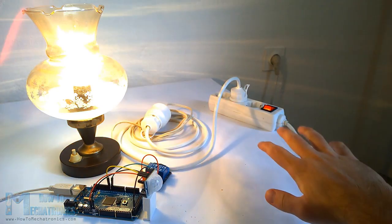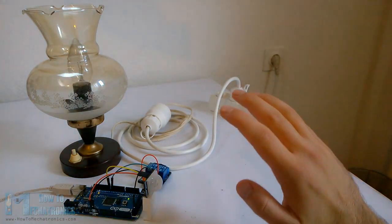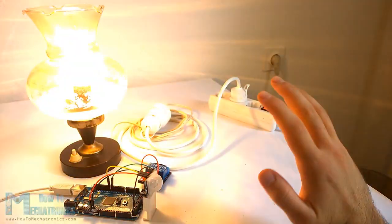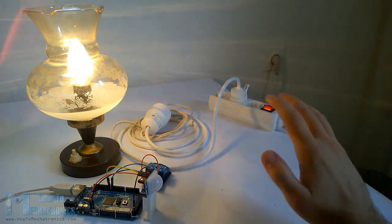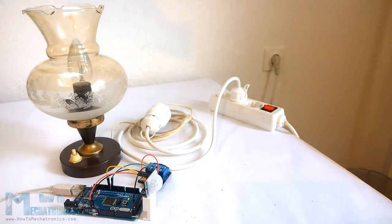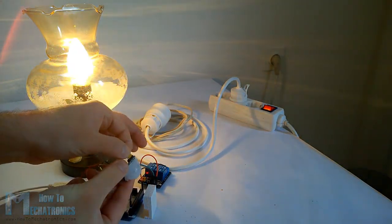Now, when I put my hand in front of the sensor, the relay will activate the lamp. But note that even if I move my hand constantly, the lamp will turn off after the adjusted delay time is over because the PIR sensor is in non-repeatable trigger mode.